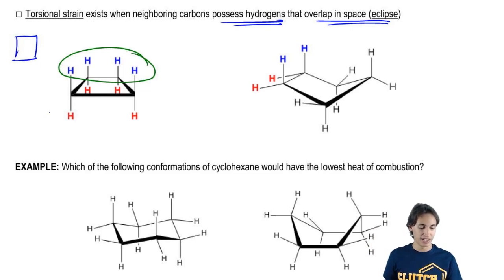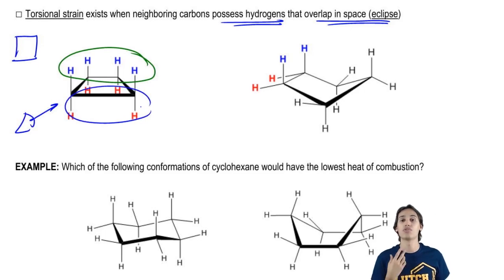For example, if I had an eyeball looking here, I would see that all of these are eclipsed. Then all the red ones are eclipsed. That is called torsional strain. Torsional strain is that strain that comes from having eclipsed bonds.